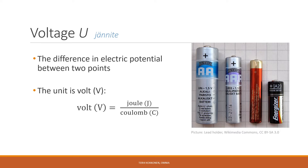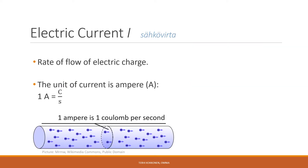The battery is a source of voltage. The voltage the battery supplies should be thought of as a kind of electrical pressure. The battery has positive and negative terminals. Just as water flows downhill in response to a difference in gravitational potential energy, electrons flow through a conductor in response to an electrical potential difference.